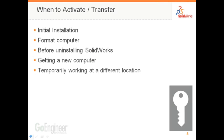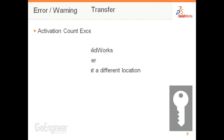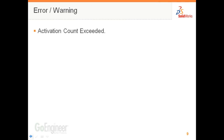When do you need to transfer or activate? Upon initial installation is when you need to activate. If you need to format a computer, you need to transfer the license off. You also need to transfer before uninstalling SolidWorks, getting a new computer, or if you want to temporarily work from a different location. Transferring a license will leave the software installed and just remove the key. If you ever receive an error that says activation count exceeded, simply go to your other computer and transfer the license off before activating on the new computer.